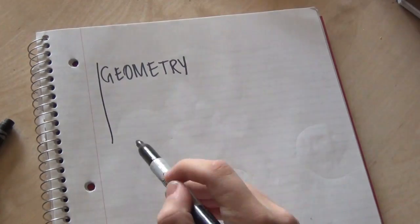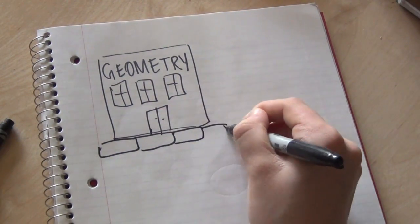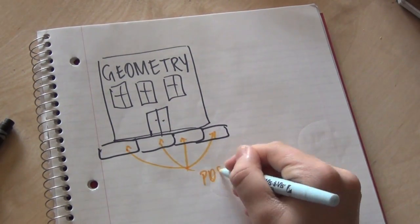Geometry, like other fields of mathematics, is built on certain postulates which can't be proven. Why? Well, there's no prior knowledge to prove them, that's sort of what makes them foundational.